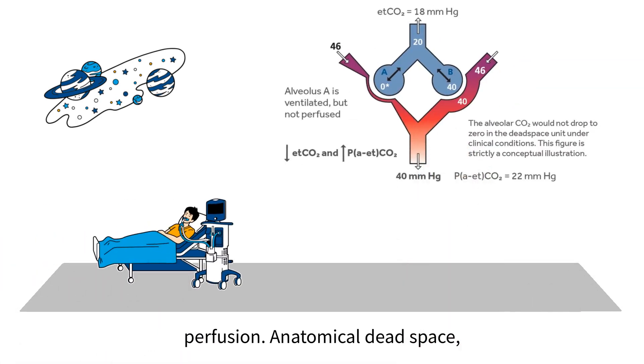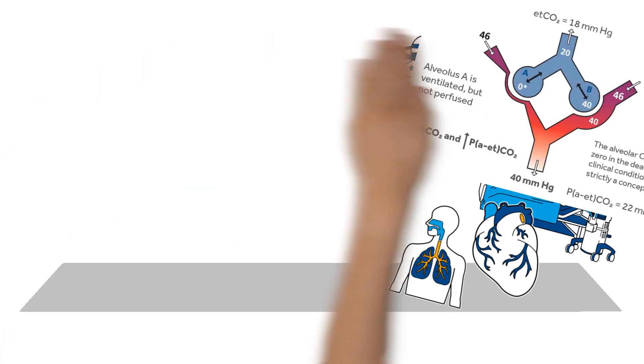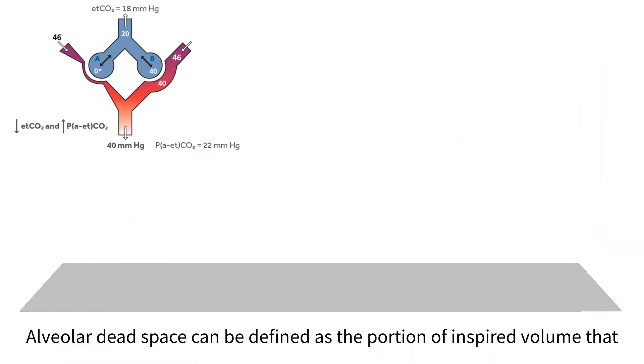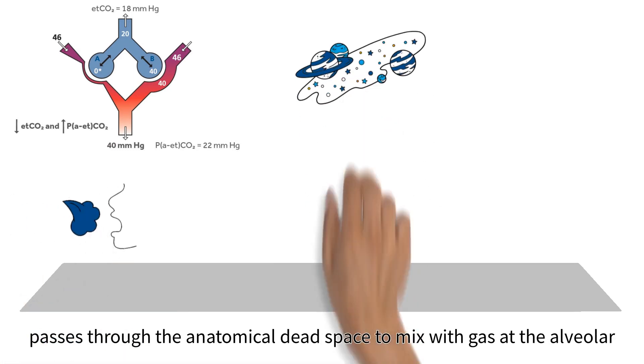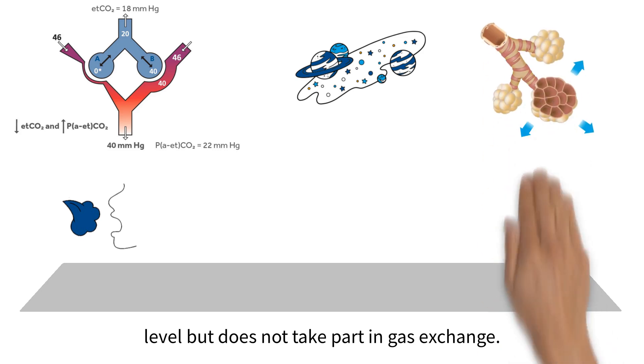Anatomical dead space, the volume of conducting airways, is rarely changed by pathophysiology. Alveolar dead space can be defined as the portion of inspired volume that passes through the anatomical dead space to mix with gas at the alveolar level but does not take part in gas exchange.